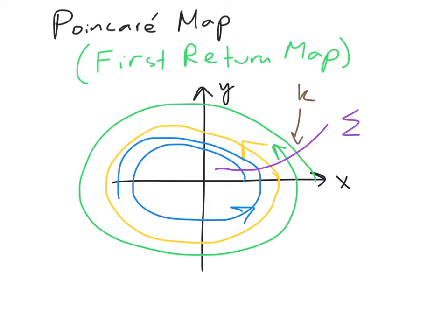If this green trajectory is intersecting sigma for the kth time at this point, well, we learn it intersects it for the k plus first time at this next point.